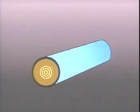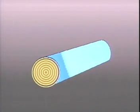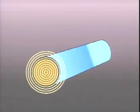When current is first switched on, a magnetic field starts to build up from the center of the wire and expands outward.